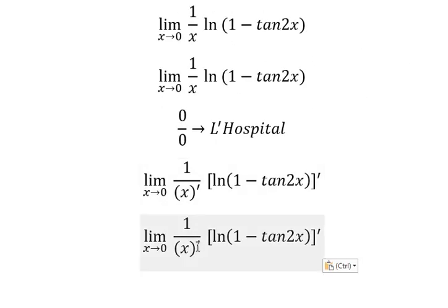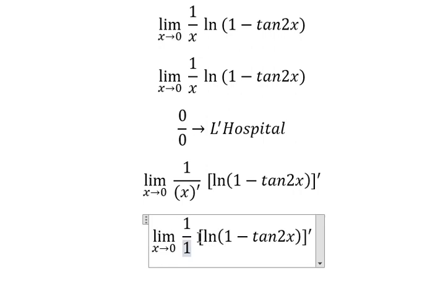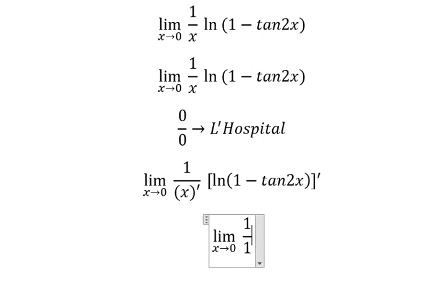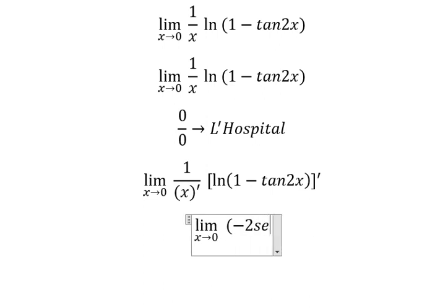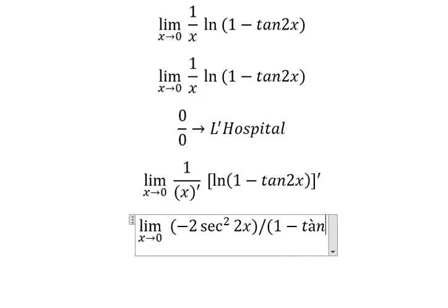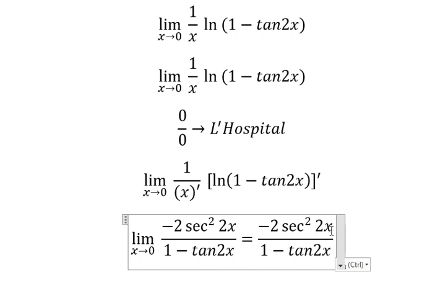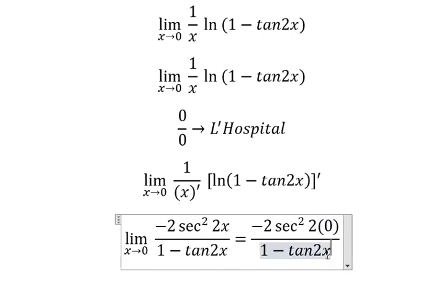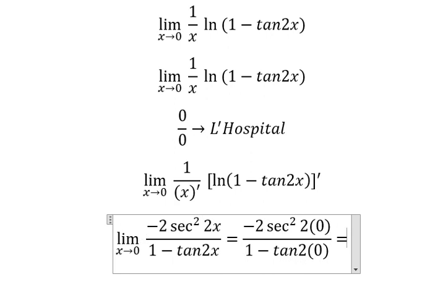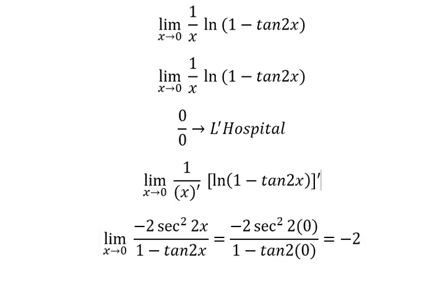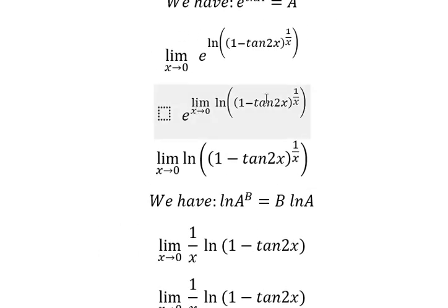The numerator gives us one. The denominator gives us negative two·sec²(2s) over (1 − tan(s)). Now we substitute zero in here, and we get negative two. So this expression equals negative two.